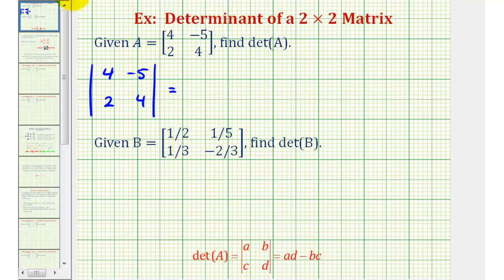So this determinant is going to be equal to four times four minus negative five times two. Well, this would be sixteen and then minus negative ten, which would be plus ten, which is equal to twenty-six.